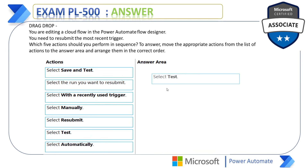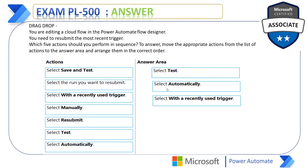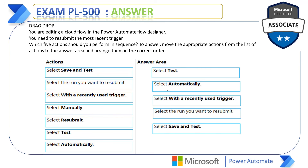Let me expose the answer. In the answer area: the first action is select Test; the second action is select Automatically; the third is select with a recently used trigger; the fourth is select the run you want to resubmit; and finally, select Save and Test to resubmit the most recent trigger in Cloud Flows. I hope you understand how to resubmit the most recent trigger in Cloud Flows as part of Power Automate Cloud Flows.